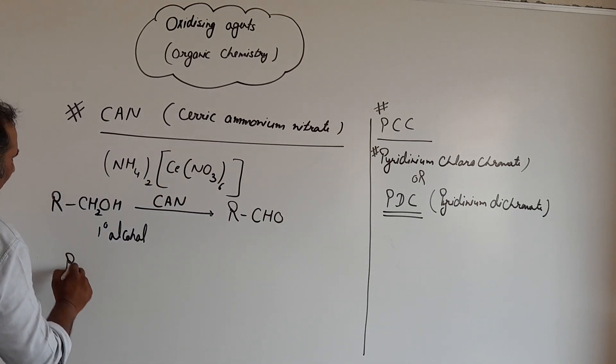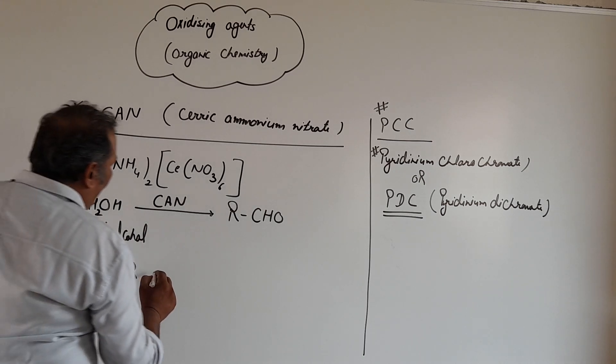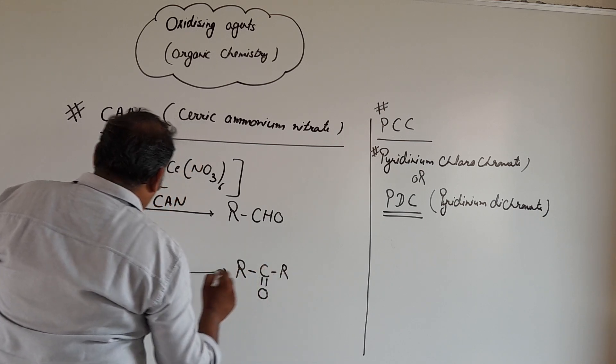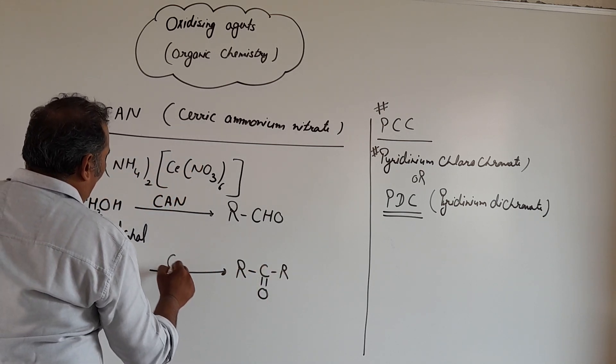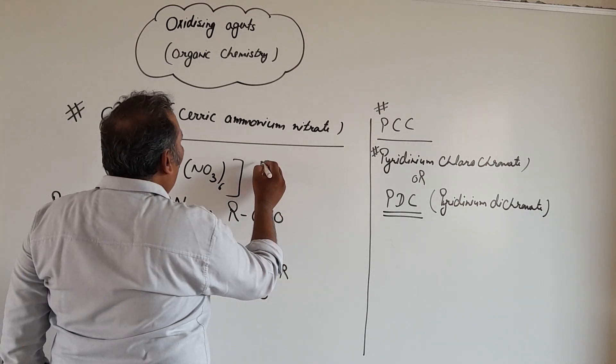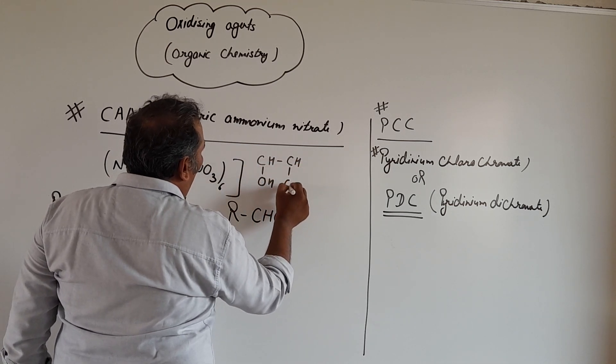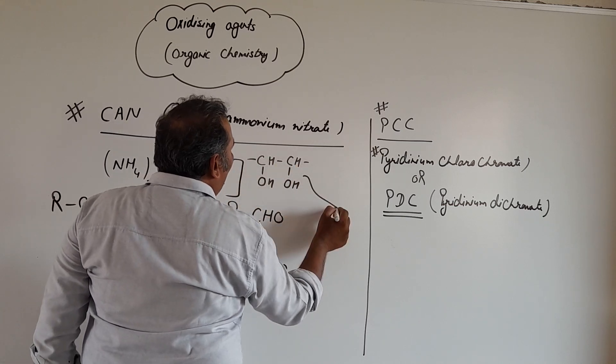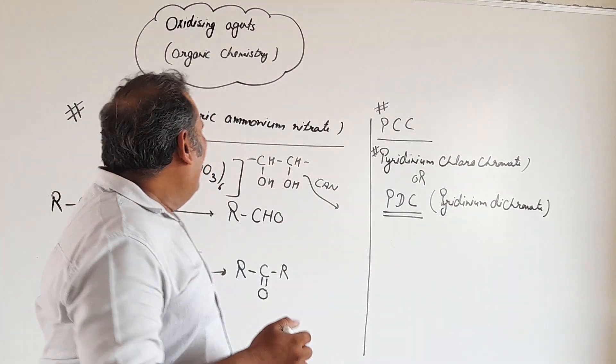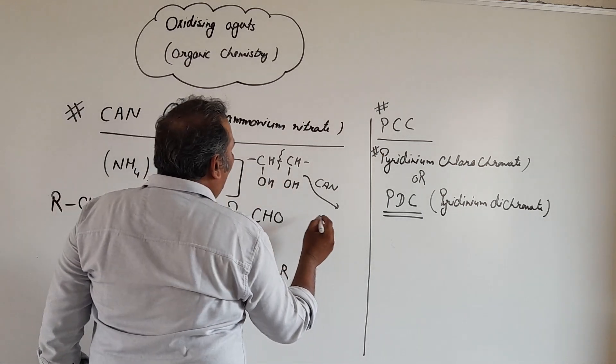2 degree alcohol gets converted into corresponding ketone. If we are taking CHOH, we have seen a diol. If we are taking vicinal diol and using CAN, then it breaks the bond between carbons as well as oxidizes this diol into ketone. So we will get 2 molecules of ketone.